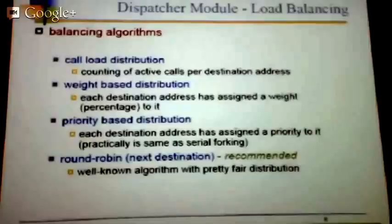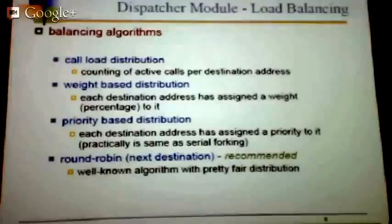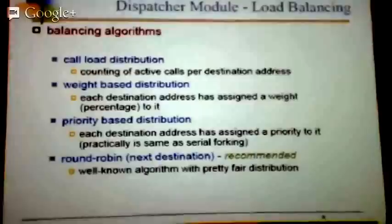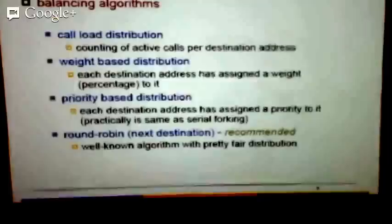Then we have the other set of algorithms we call balancing algorithms. Call load distribution: you have a set of next nodes, count how many active calls each node is serving at that point, and choose the least loaded. Weight-based distribution: you have maybe a more powerful server or gateway with more channels, and another with fewer channels. Priority-based distribution: this is more like failure routing — try that one always, and if it's not working, try alternatives.